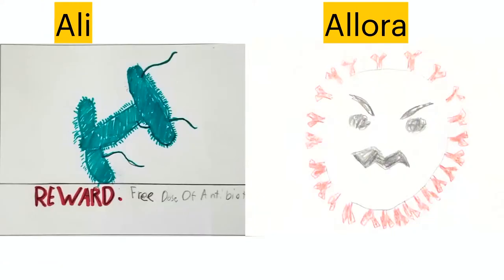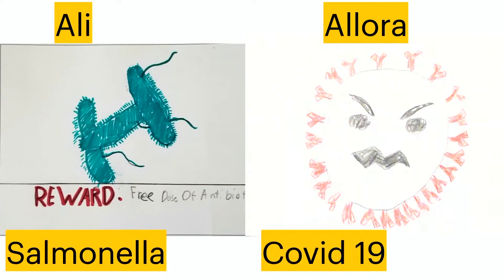Up next, we have Allie and Allura. I'm going to guess Allura's drawing is COVID. For Allie, it says 'reward: free dose of antibiotic,' so I'm going to go with cholera. The answer was salmonella for Allie. But I was correct on COVID for Allura, and correct that it was a bacteria for Allie. Great job with these. Loving the artwork.